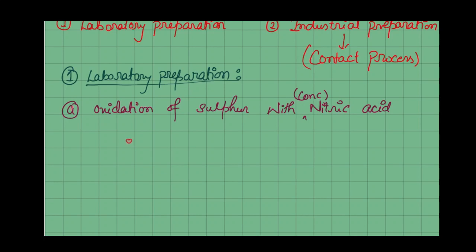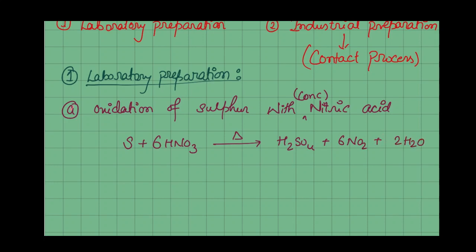Sulfur is oxidized by concentrated nitric acid. The reaction is: S + 6HNO₃ with heat gives H₂SO₄ + 6NO₂ + 2H₂O. Heat is necessary — without heat the reaction will not proceed. We added nitric acid to sulfur, then applied heat, and we got our desired product, that is sulfuric acid. The rest are byproducts which we are not concerned with.